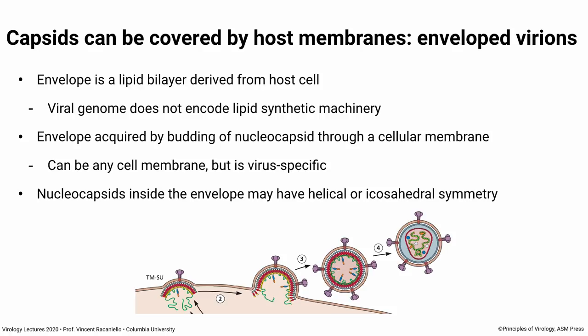Many viruses have an envelope. A few facts: it is always derived from the host cell because viruses can't make lipids. It's acquired by budding of the nucleocapsid through some cell membrane — it can be many different membranes, including nucleus, ER, Golgi, or plasma membrane, but it's always virus-specific. The nucleocapsids inside can have helical or icosahedral symmetry. Here's a quick overview of budding: the viral components are assembling at the plasma membrane and the particle comes out. We'll explore this in detail later.